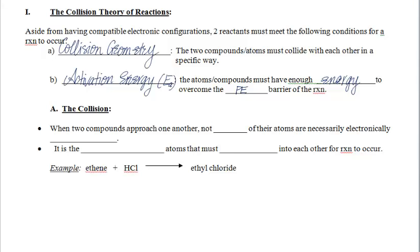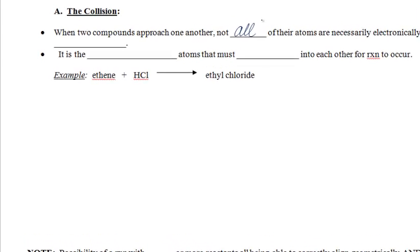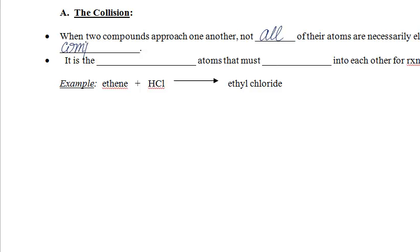In terms of your two reactant particles getting together, it has to be the parts that are attracted to each other that jigsaw together. If you get two repulsive parts of your reactant particles coming together, then your reaction is going to fall apart. So when your two compounds approach one another, not all of their atoms are necessarily electronically compatible. There are some parts on that atom that's compatible with its partner. And then there's some parts that are repulsive and you can guess, surprise surprise, that it's the compatible parts that must collide into each other. They're the ones that have to meet in order for the reaction to go ahead and proceed.